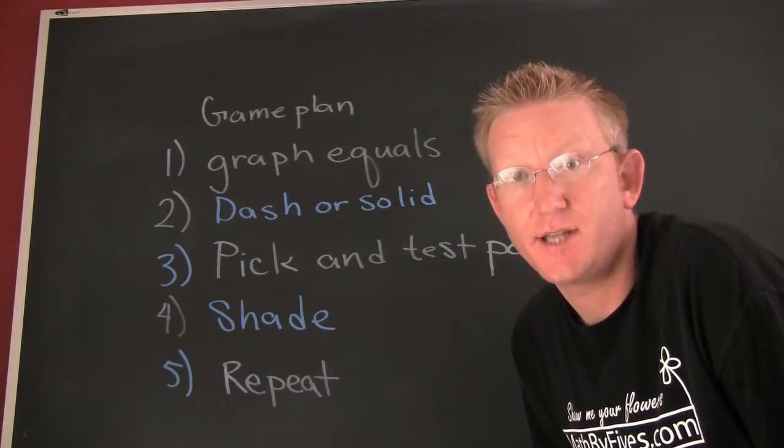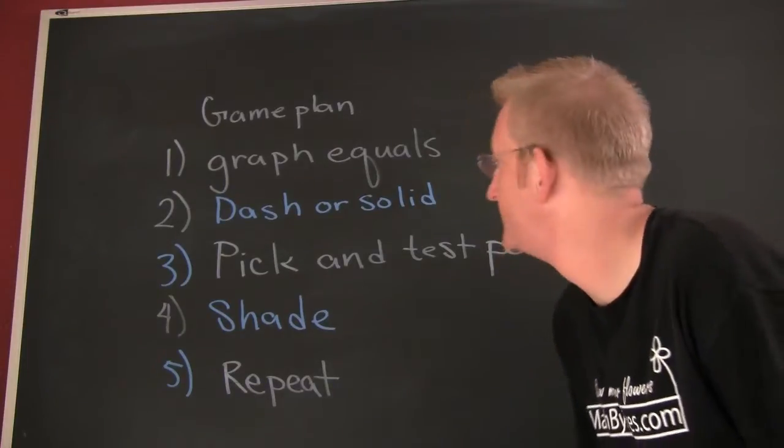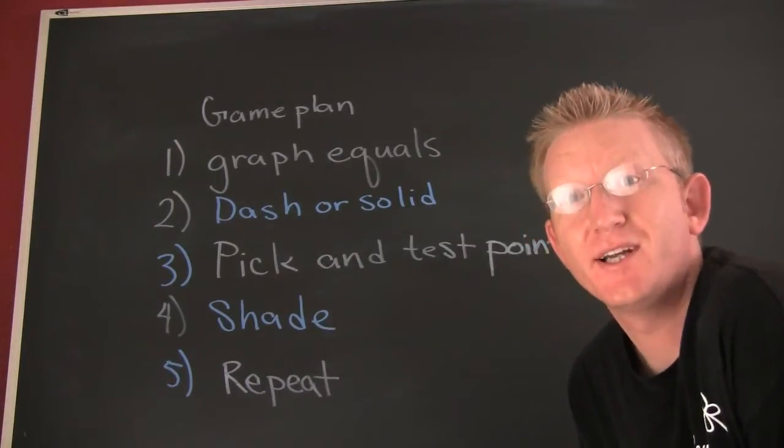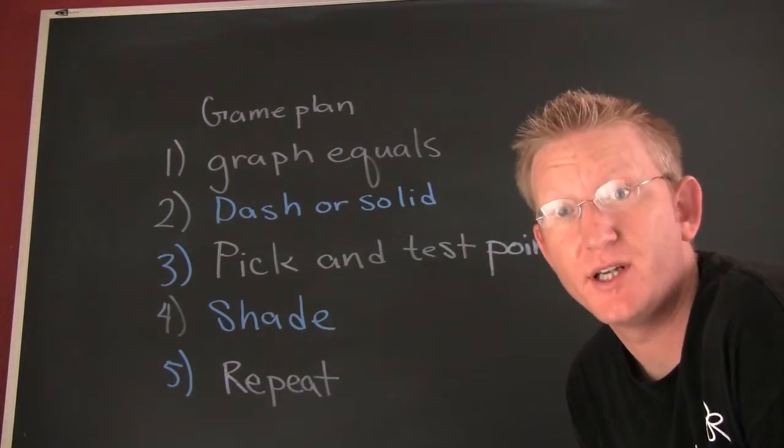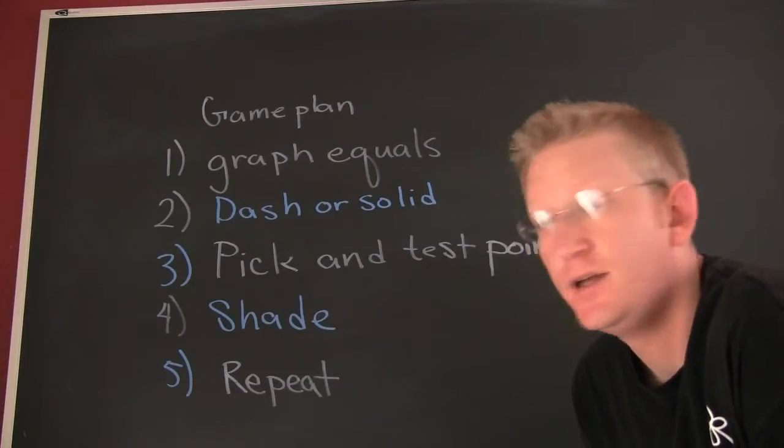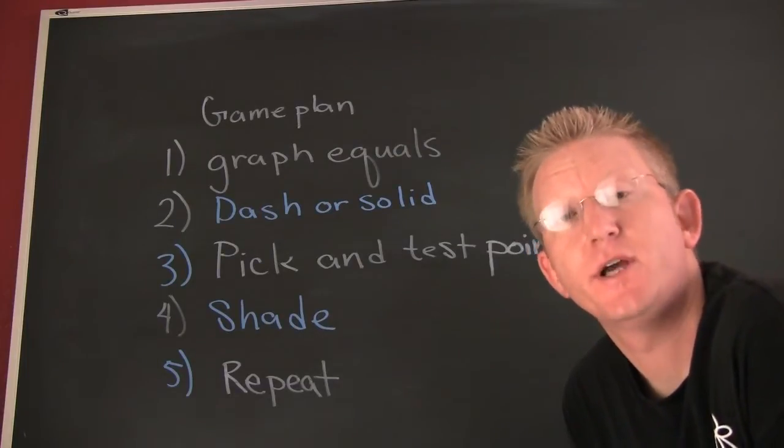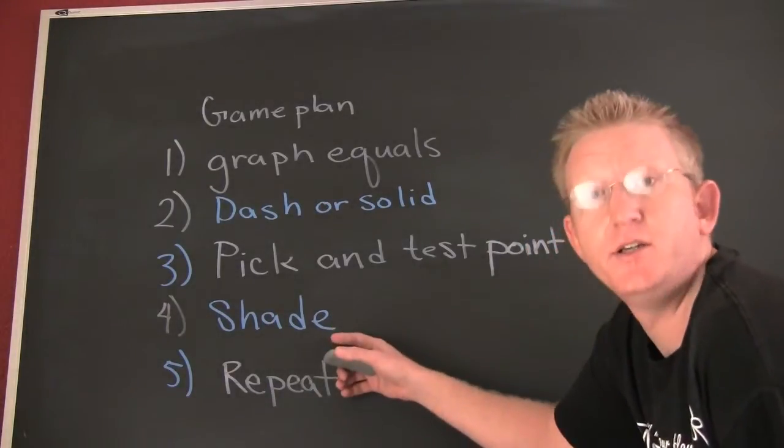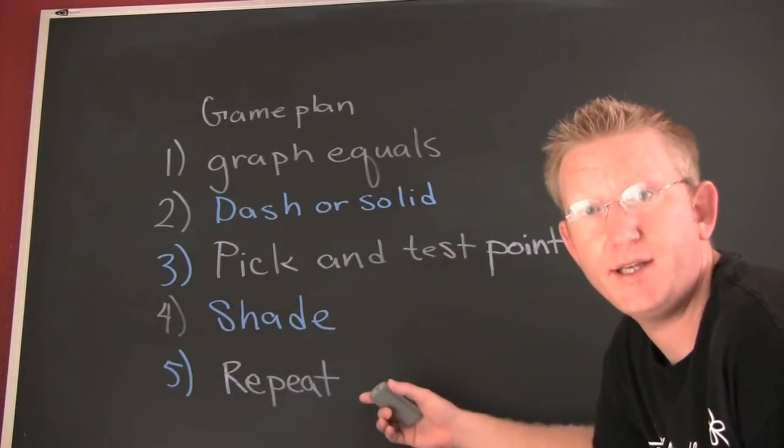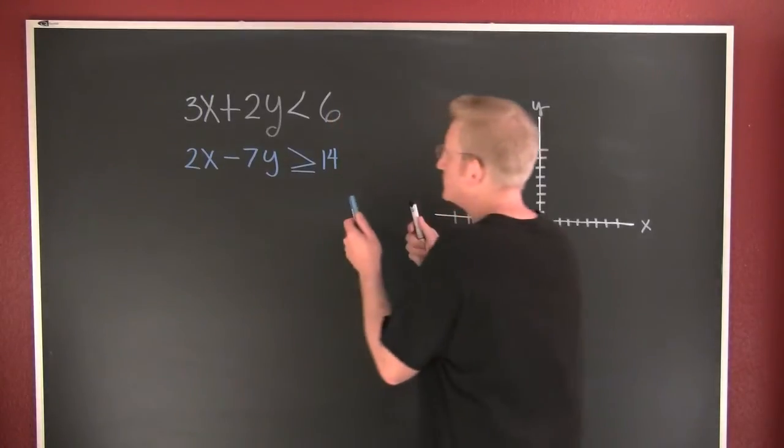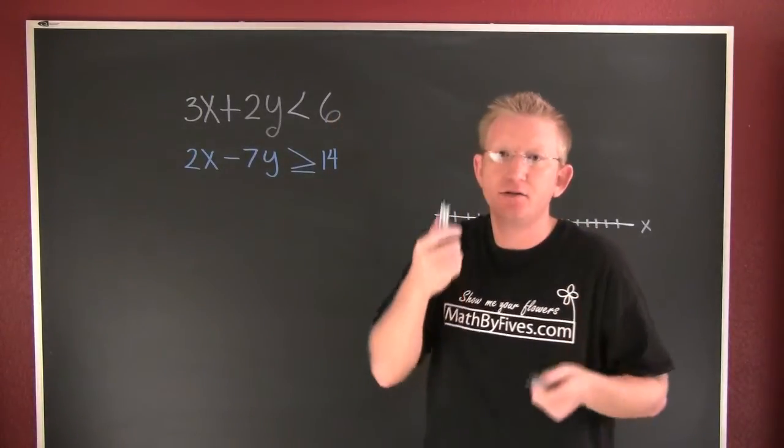Then we're gonna pick a point and we're gonna test that point to see which way we're gonna shade. If it's a true value you shade towards it, if it's a false value you shade away from it. Then we're gonna shade and repeat.